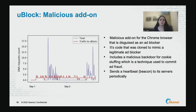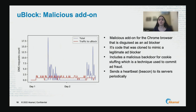Another example is uBlock. uBlock is a malicious add-on for the Chrome browser that is described as an ad blocker. It uses code cloned to mimic a legitimate ad blocker but includes a malicious backdoor. In the time series here, you can see that uBlock sends a heartbeat every 15 minutes to its servers using a specific hostname.